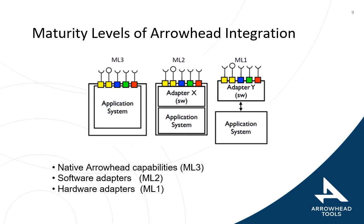Maturity levels of Arrowhead are defined for integrability reasons. The highest level, maturity level 3, is for native Arrowhead systems. If your system can be made Arrowhead compliant through a software adapter, that is maturity level 2. If it requires a hardware adapter, that is maturity level 1. Within the Arrowhead infrastructure, various software and hardware adapters are available for various protocols and system types.